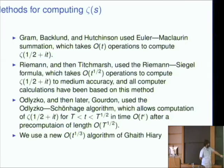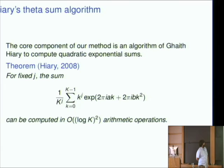So we're using a new t to the one third algorithm of Gethiari, which is what allows us to go further. This is really only for calculating at single values or values in a small interval, not on as large an interval as Odlizko-Schonhage lets you do. So I'll very briefly tell you what the idea of the algorithm is. So what Gethiari actually has is a way to compute quadratic exponential sums that look like this. So a and b are some real numbers. K is an integer. The direct way of evaluating this sum would take time k, because you have to evaluate k terms. And he found a way to evaluate this basically in logarithmic time, which is essentially no time at all for most purposes.